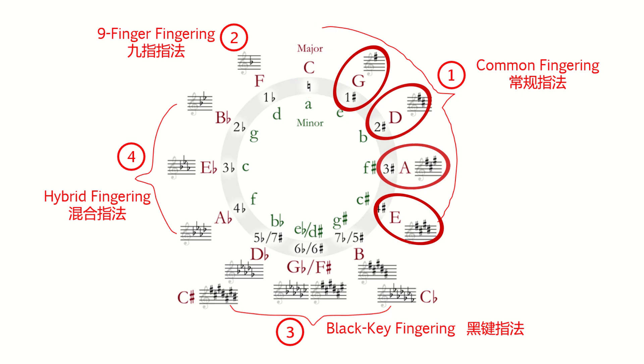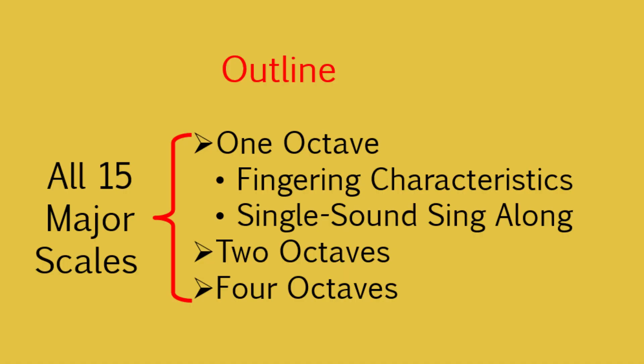In this Lesson 8, we'll go back to the C major position, then counterclockwise to 11 o'clock and learn the F major scale. We'll also experience the charming single sound system, of course. Same procedures as before — I'll play 1, 2, and 4 octaves.